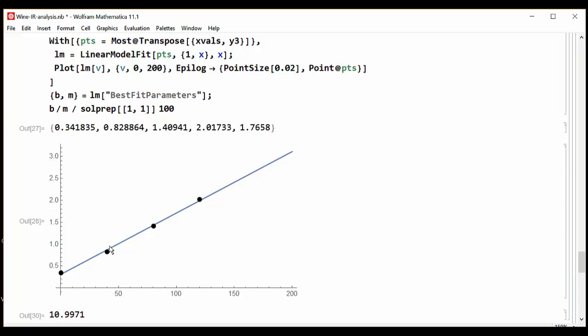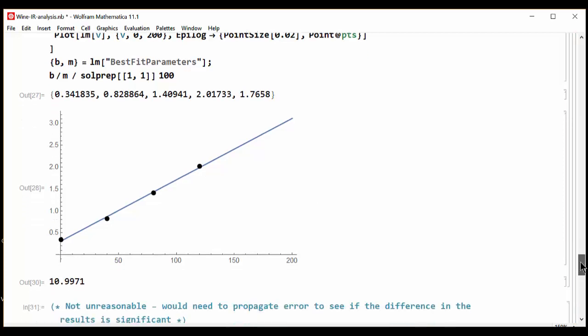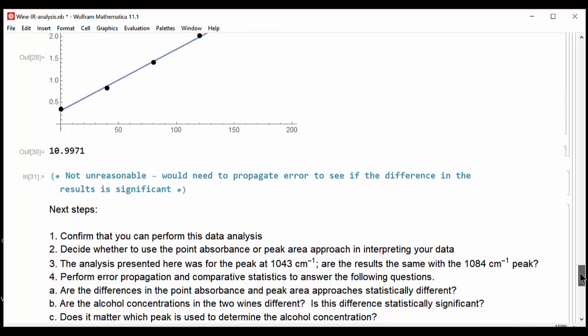Reasonable linearity, and we get around 11% for the concentration of the alcohol. It is possible that the errors that we see here, the slight deviations, make this number and the previous one similar from a statistical standpoint. But a propagation of error needs to be performed in order to do that.